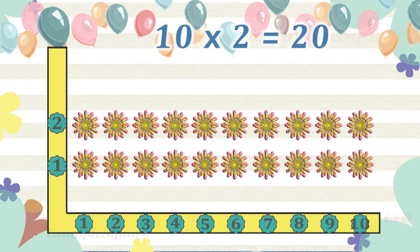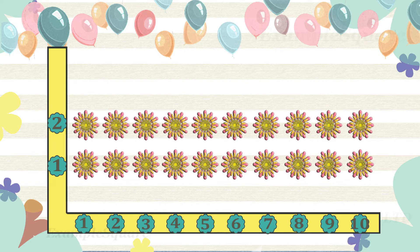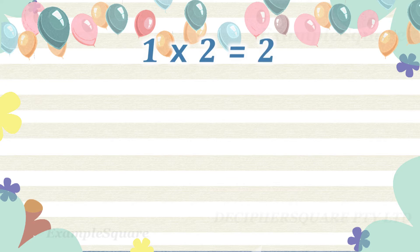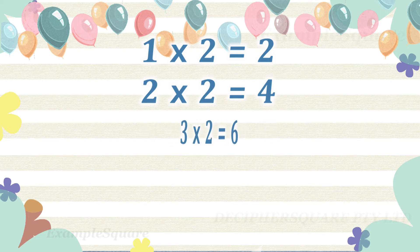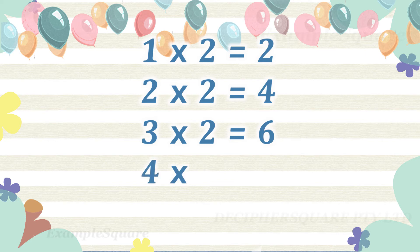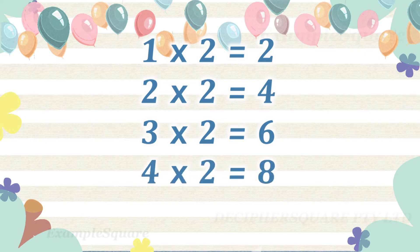1 times 2 is 2, 2 times 2 is 4, 3 times 2 is 6, 4 times 2 is 8, 5 times 2 is 10.